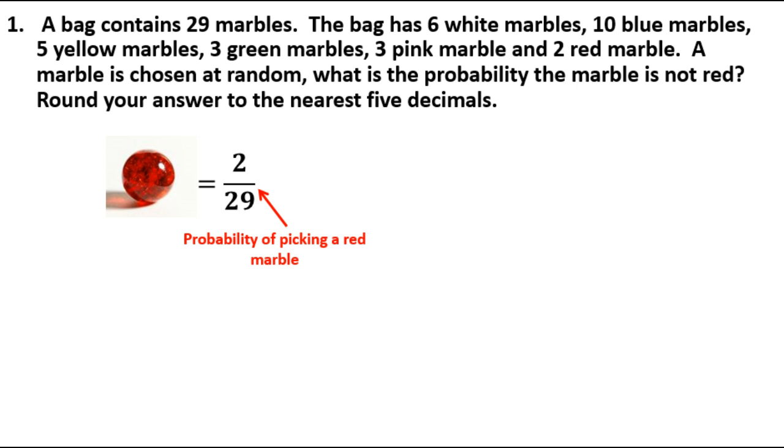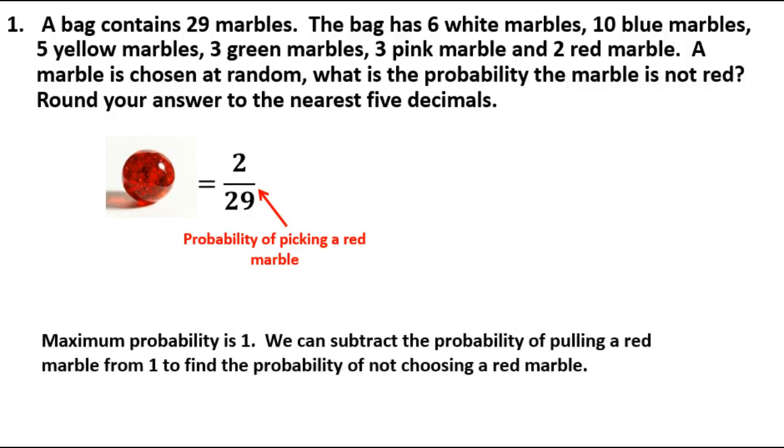Okay, now, what we're trying to do here, now that we know that, what we're going to do is take 1 and subtract that 2 divided by 29. The maximum probability we can get is 1. So if we take 1 minus 2 over 29, that will give us the probability that the marble chosen is not red.